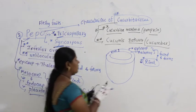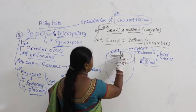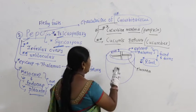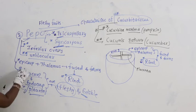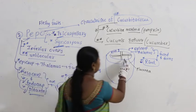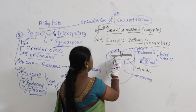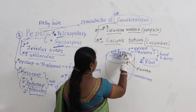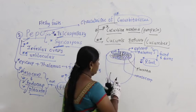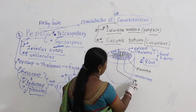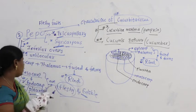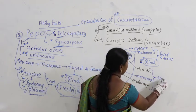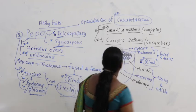In the center you find placenta. What you find here is endocarp — the seeds. In the mesocarp you can see the arrangement of seeds. Mesocarp, endocarp, and placenta are all fleshy and edible.